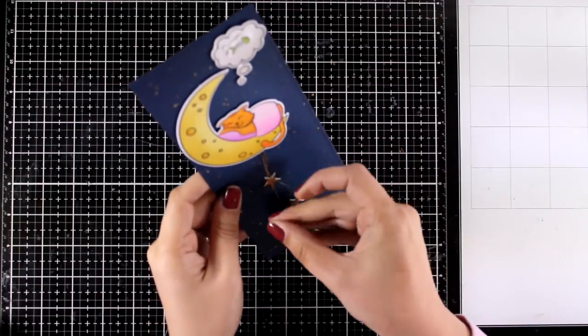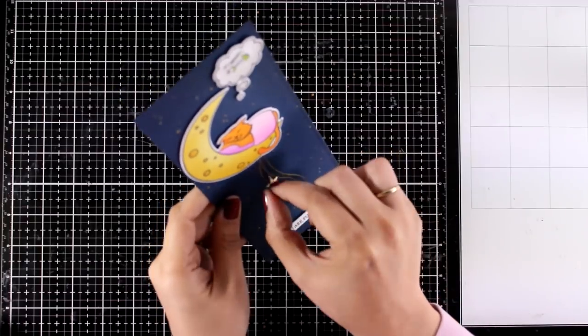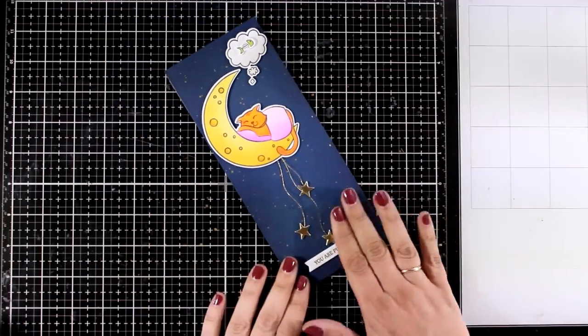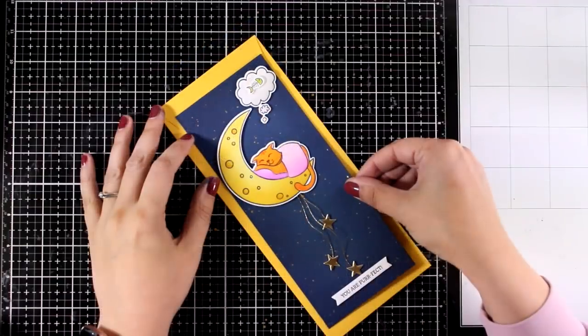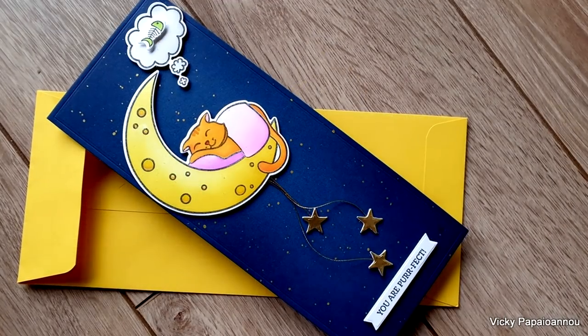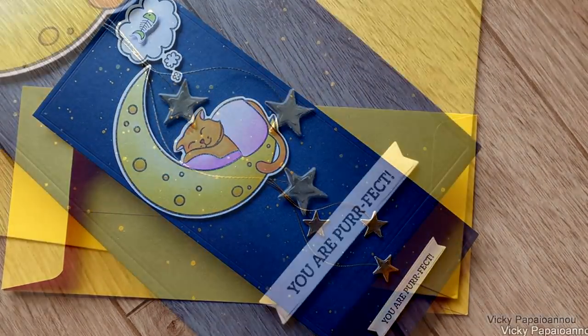And here is how my panel looks at the moment with all those dangling stars. I absolutely love an interactive element on a card. I think it always brings a smile on a recipient. Now all I have to do is to stick this panel on a pre-folded card that is 3.5 by 8.5 and it is going to fit nicely in the standard business card envelope. Here are some close-up photos on the card that I made for today.